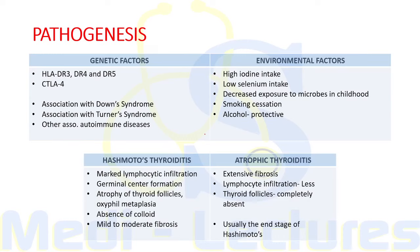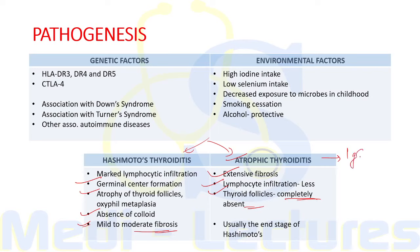Histologically, Hashimoto's thyroiditis is characterized by marked lymphocytic infiltration with germinal center formation, atrophy of thyroid follicles with oxyphilic metaplasia, absence of colloid, and mild to moderate fibrosis. Atrophic thyroiditis is characterized by extensive fibrosis, less pronounced lymphocytic infiltration, and complete absence of thyroid follicles. It usually represents the end stage of Hashimoto's thyroiditis, although a distinct form with marked fibrosis is related to IgG4-related disease.